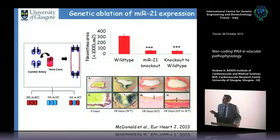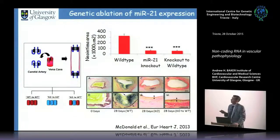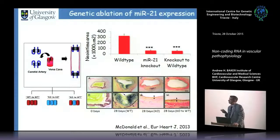You can do wild-type to wild-type grafts, knockout to knockout, or put a knockout graft into a wild-type animal. At 28 days, wild-type vein grafts show very active neointima formation; in double knockouts this is eliminated. Importantly, taking out miR-21 only in the donor tissue produces exactly the same effect, showing it's loss within the graft tissue itself — not something circulating — that mediates the protective effect.